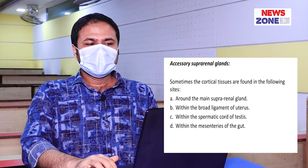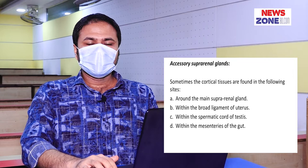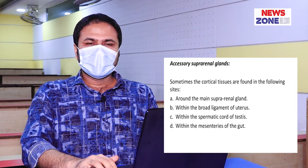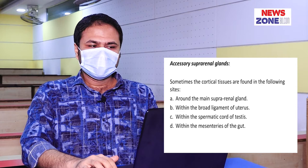Accessory suprarenal glands. Sometimes cortical tissues are found in the following sites: 1. Around the main suprarenal gland. 2. Within the broad ligament of the uterus. 3. Within the spermatic cord of the testis. 4. Within the mesenteries of the gut.